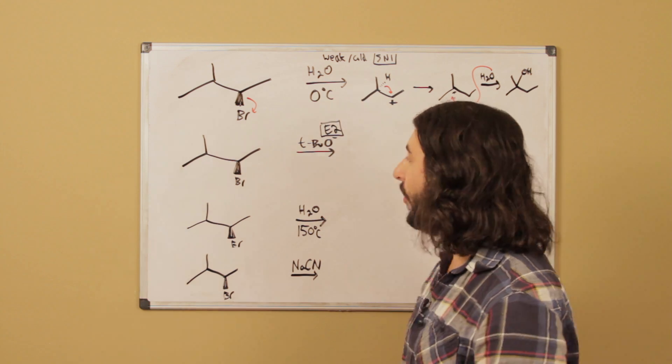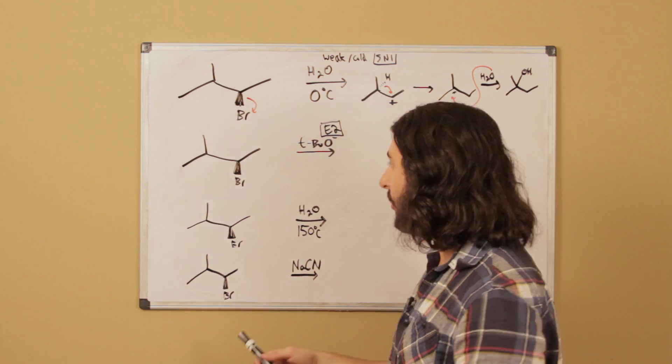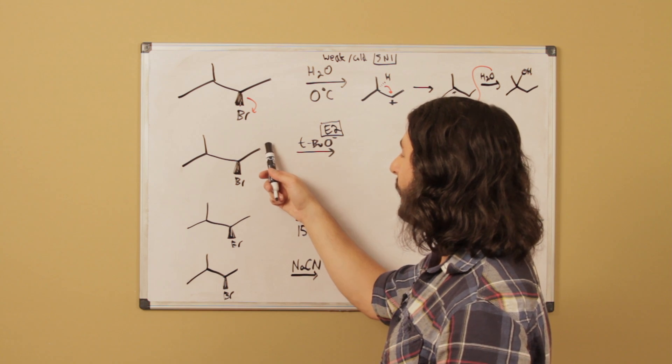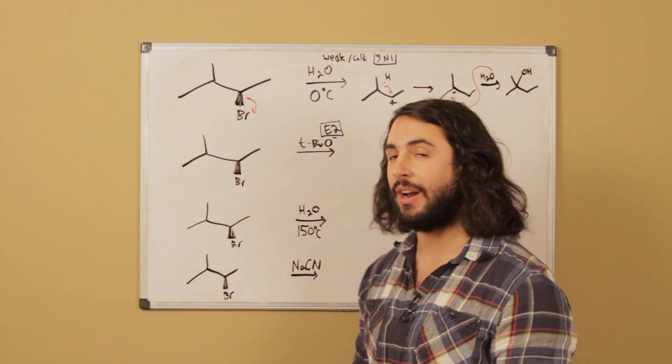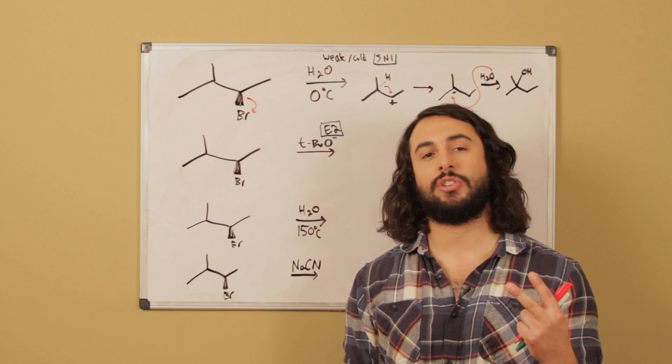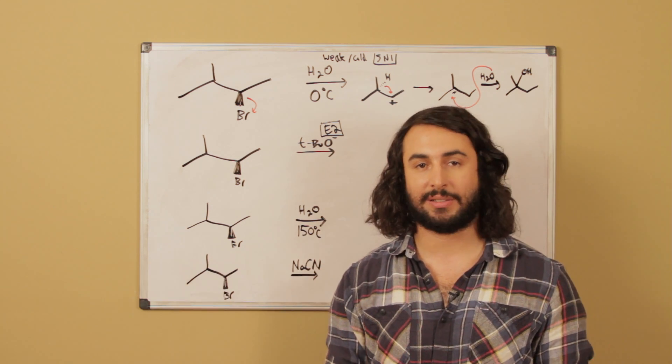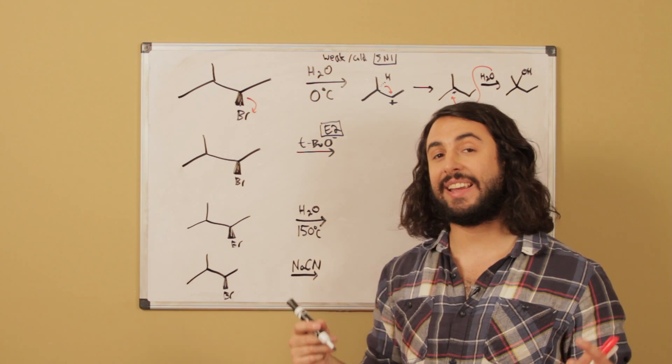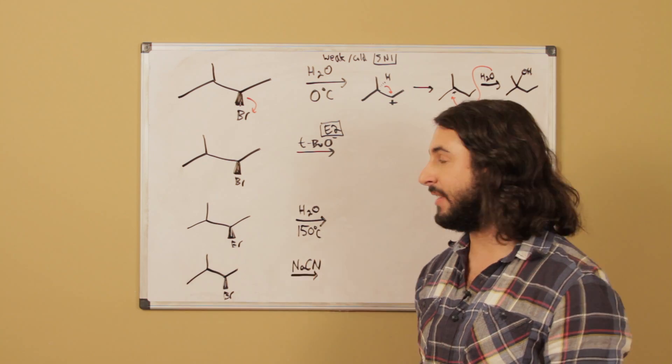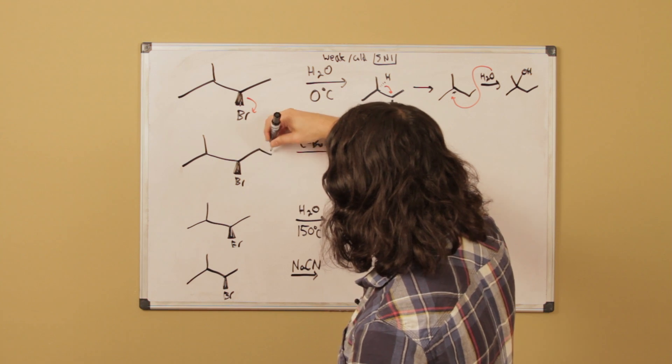Now furthermore it has two options in terms of which protons it's going to grab. There's three protons over here and there's one proton over there, so there's potentially two different elimination products. And so we're comparing the Zaitsev and the Hoffman elimination products. But we know that because of the steric hindrance of that base it is going to have a much easier time.